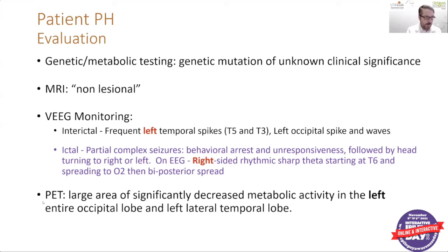This patient also had a PET scan, which looks at metabolism. With a PET scan, we're looking for areas of lower metabolism, which helps determine a possible seizure onset area identified by lower metabolic activity. For this patient, the PET scan showed significantly decreased metabolic activity in the left occipital lobe and left temporal lobe. So we were able to see spikes on the left and PET showed decreased metabolism on the left, but her seizure onset on scalp EEG appeared to be originating from the right temporal and occipital lobes.